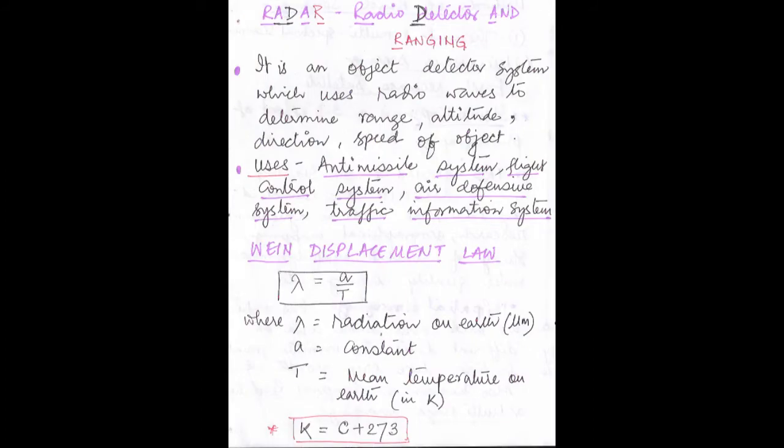Next is what is radar? The full form of radar is Radio Detector and Ranging. It is an object detector system that uses radio waves — from there the name came as radio detector. It uses radio waves to determine the range, altitude, direction, and speed of the object. Radar is used in the anti-missile system, flight control system, air defensive system, traffic information system, and various other cases.